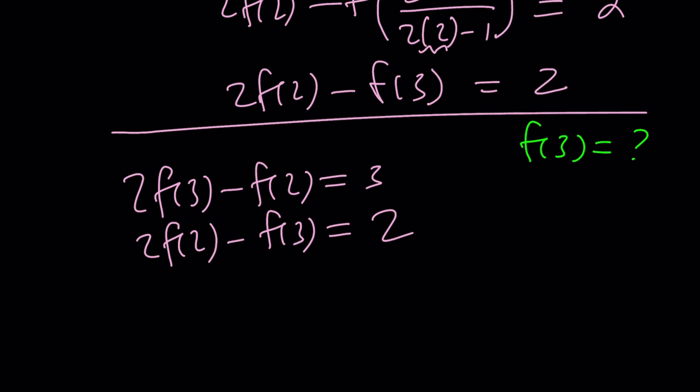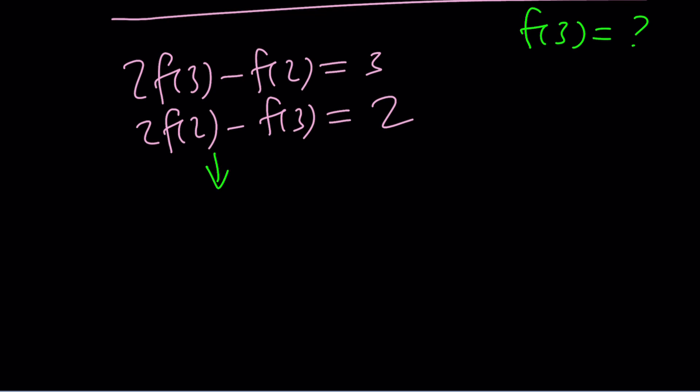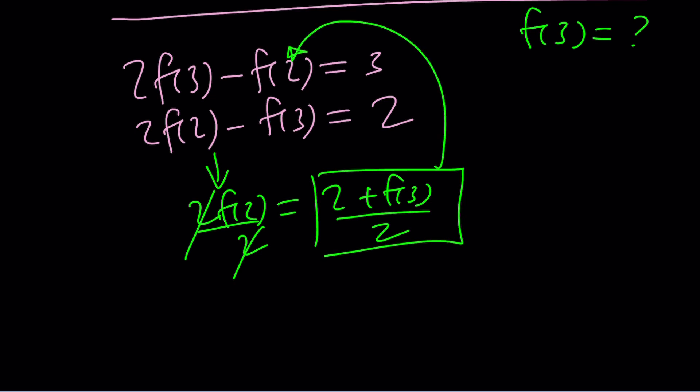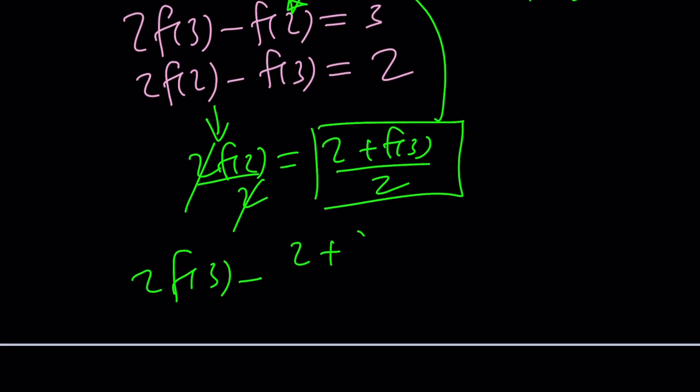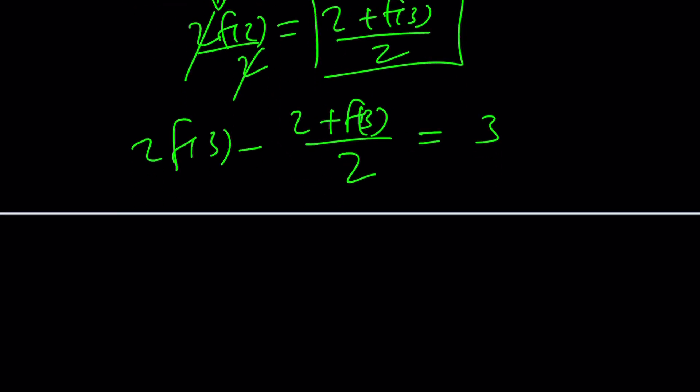So why don't we just isolate f of 2 from one of these equations? For example, the second one. 2f of 2 equals 2 plus f of 3. Divide both sides by 2. And you now got f of 2 in terms of f of 3, which you can substitute here. Let's go ahead and plug it into the first equation. 2f of 3 minus f of 2, which is 2 plus f of 3 divided by 2. That replaces f of 2 equals 3.